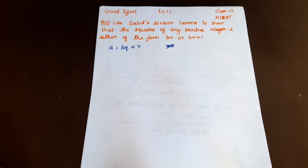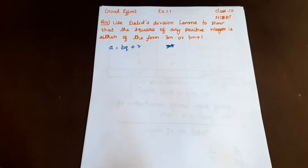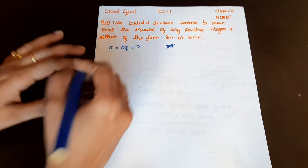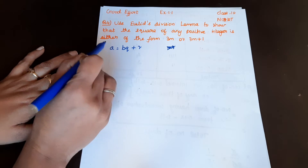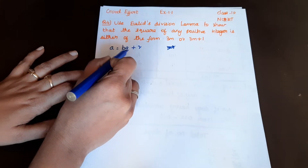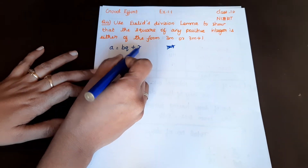We will use Euclid's division lemma to prove this equivalent statement. So what do we prove? The square of any positive integer is either of the form 3m or 3m+1. Euclid's division lemma states a = bq + r, where a is the dividend, b is the divisor, q is the quotient, and r is the remainder.